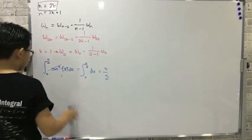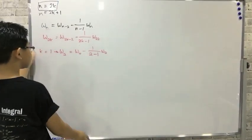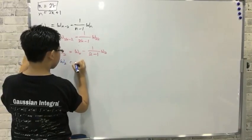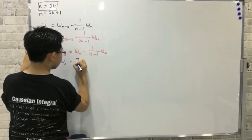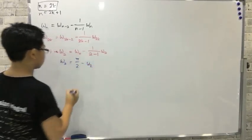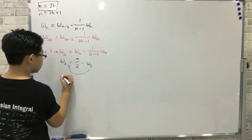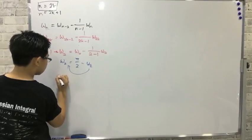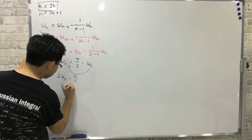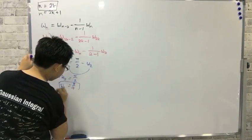First let's take k equals 1. We have W of 2 equals W of 0 minus 1 over 1 times W of 2. First we have to solve for W of 0. Well, it's quite simple: the integral from 0 to pi over 2 of sin to the power of 0 of x dx is simply 1, so this is just the integral from 0 to pi over 2 of dx, which is pi over 2.